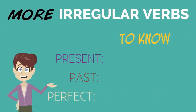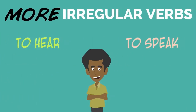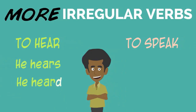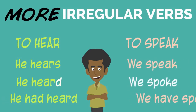Some forms of the verb 'to know' include: Elise knows, Elise knew, Elise has known. Some forms of the verb 'to hear' include: he hears, he heard, he had heard. And some forms of the verb 'to speak' include: we speak, we spoke, we have spoken.